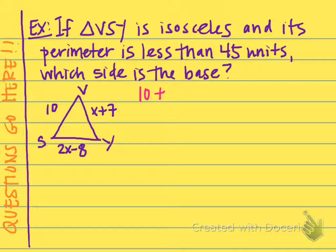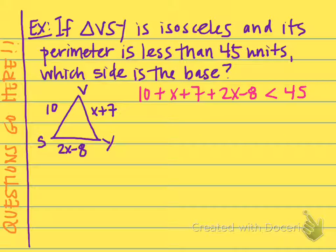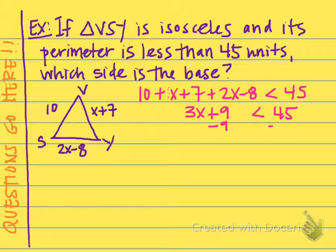Just add up the sides: 10 plus x plus 7 plus 2x minus 8 is less than 45 units. We're going to solve this just like we would an equation. Combining like terms: 1x and 2x make 3x; and 10 plus 7 minus 8 equals 9. So 3x plus 9 is less than 45. Then subtract 9 from both sides to get 3x less than 36, and divide both sides by 3, which gives us x less than 12.